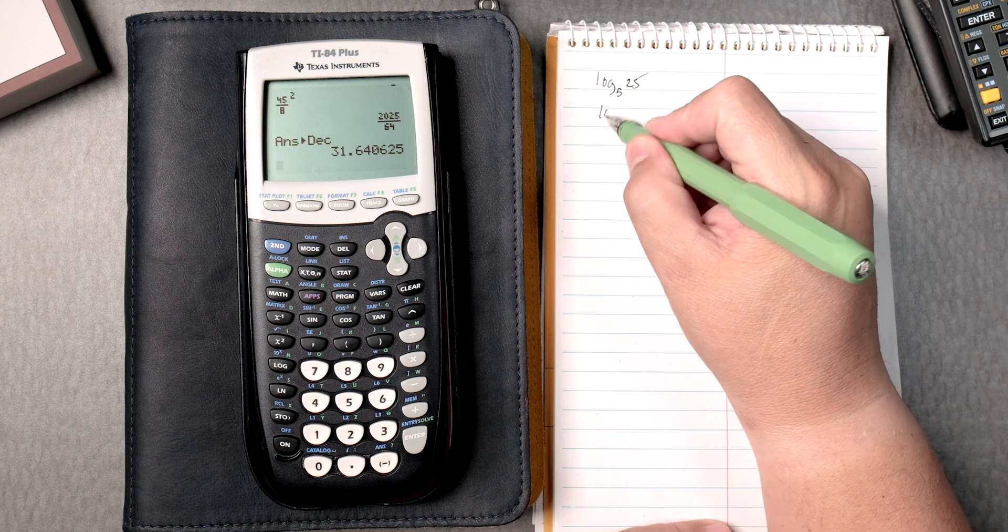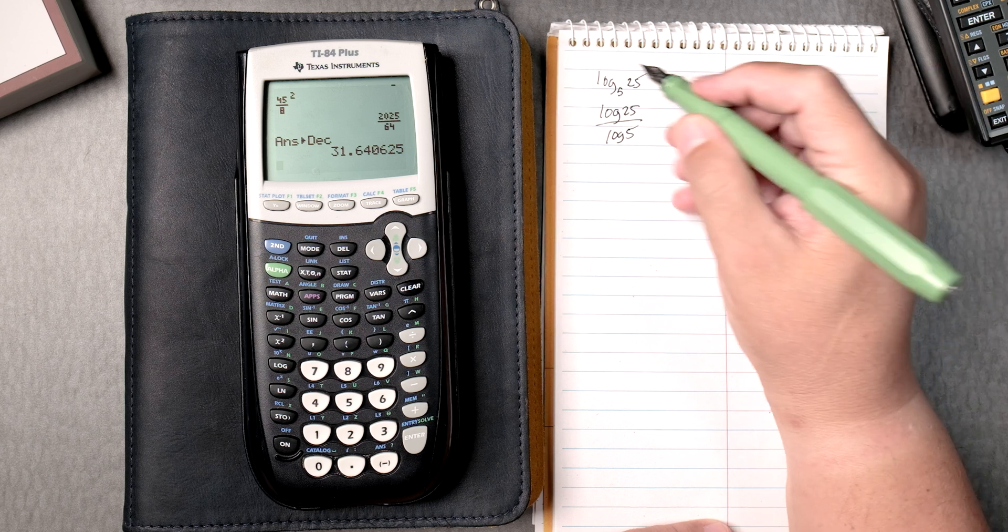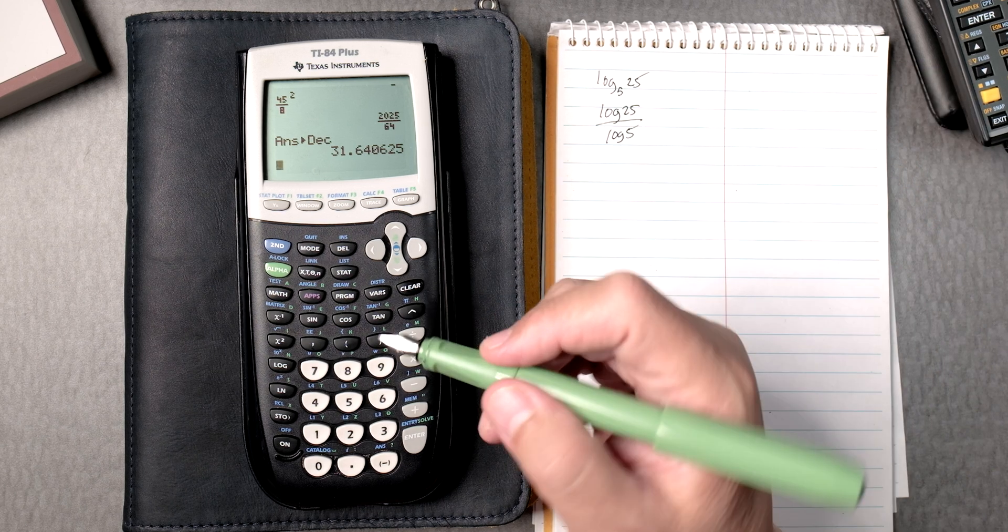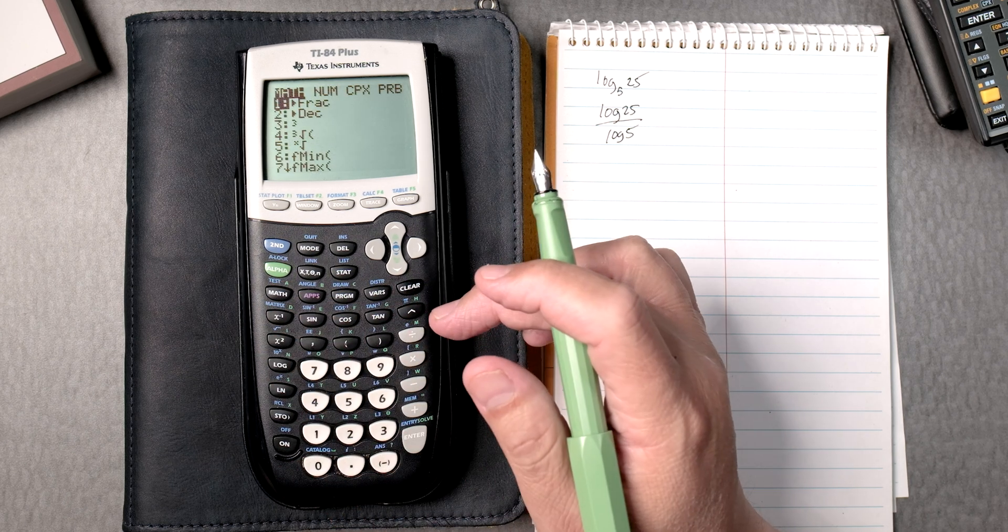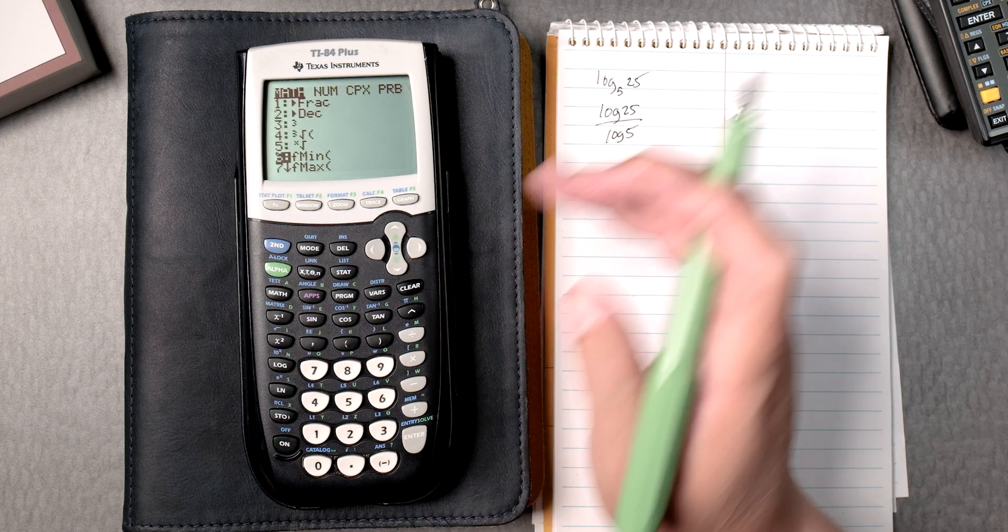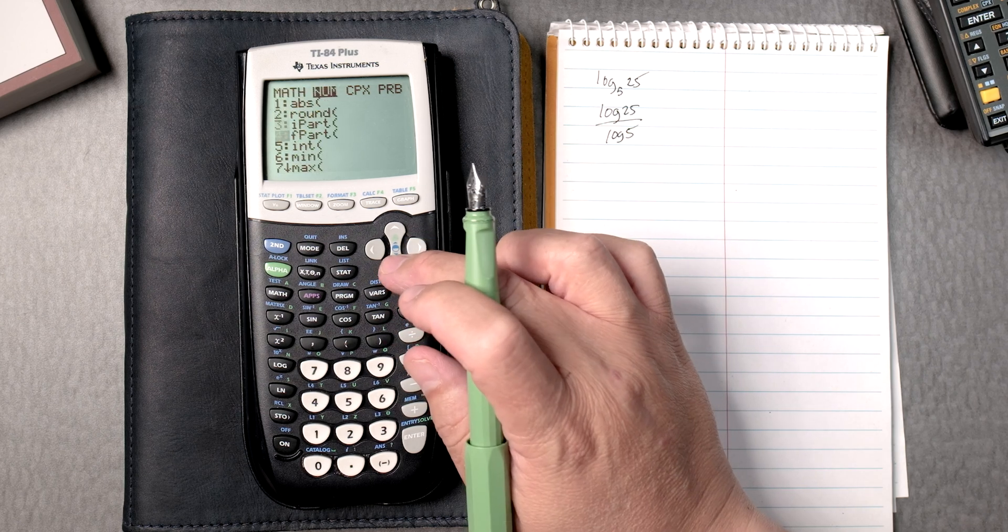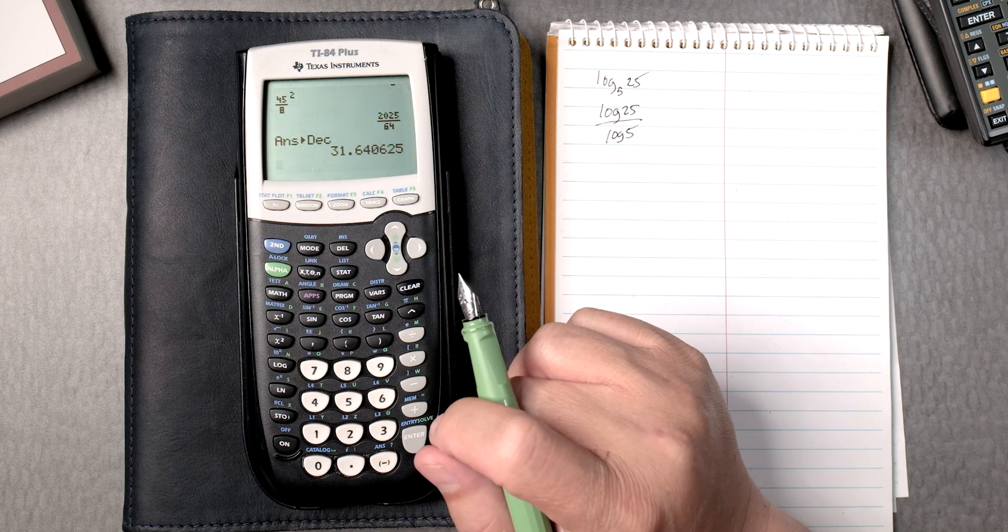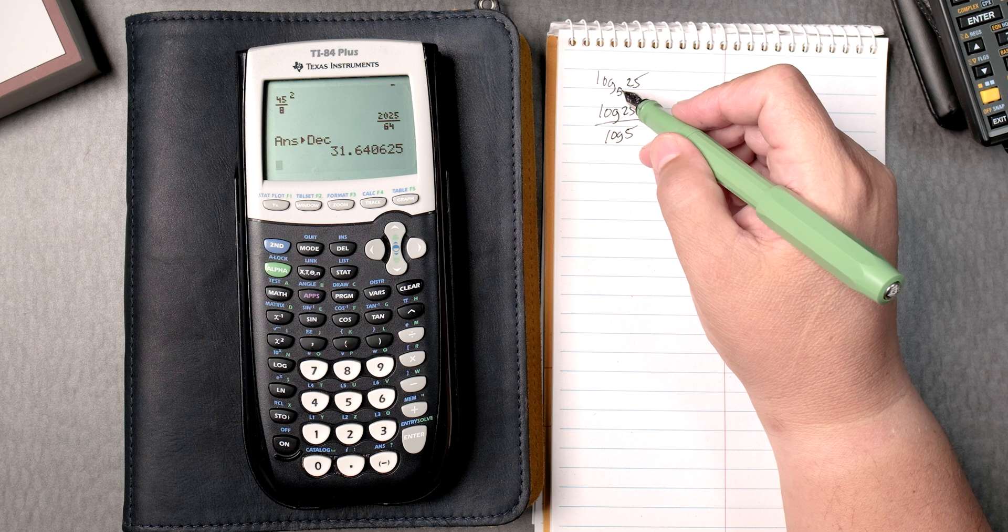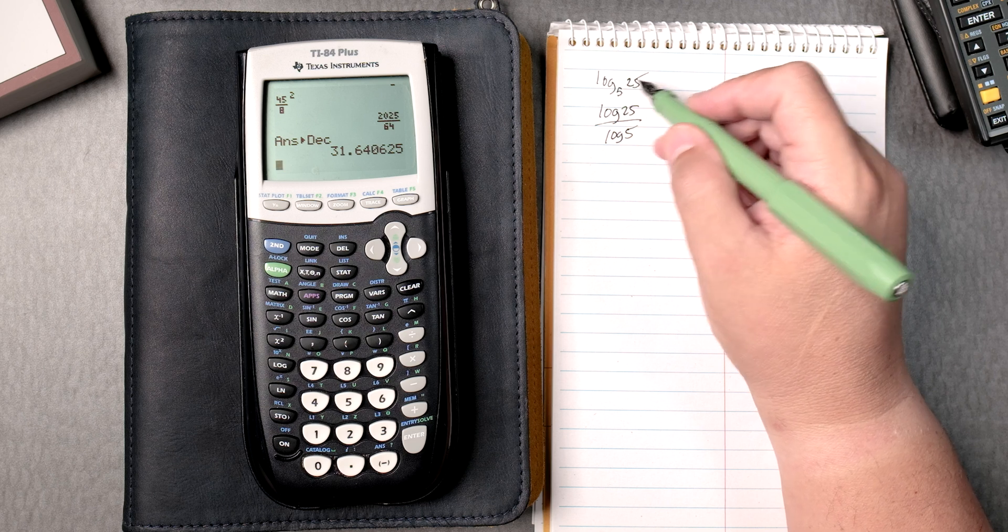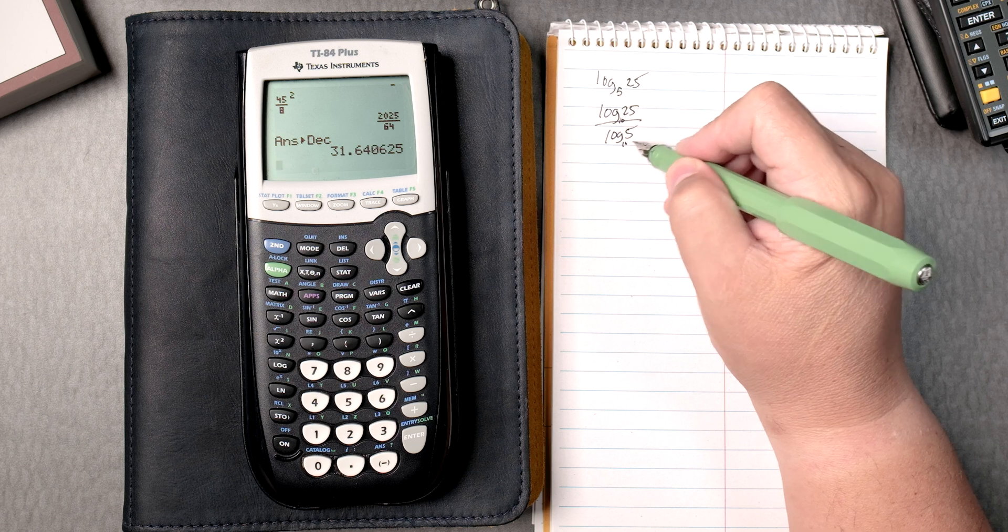And there's a rule that says that you can take the log of 25 over the log of 5. Why? Well, this one's base 5, and maybe somewhere in here, maybe under math or something, there is a log with a different base. I don't really see it, and that's going to take forever, and I guess you could go to catalog and find it. An easy way is to remember that you can take the log of 25, which is base 10, divided by, which is the number in the bottom, log of 5.